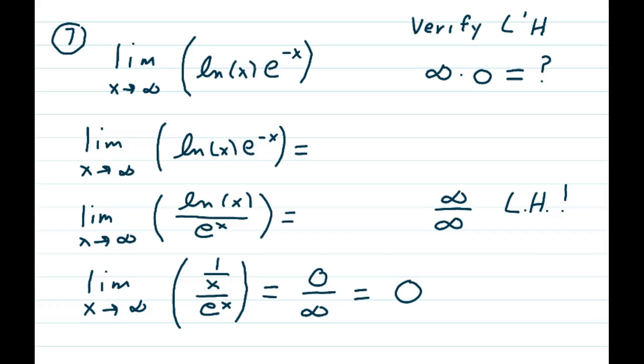We change the function and have the limit as x approaches infinity of the natural log of x times e to the negative x. Take that e to the negative x, put it down below, and we get the limit as x approaches infinity of the natural log of x over e to the x, which is now infinity over infinity. So L'Hopital's rule applies now.